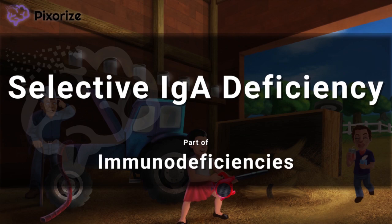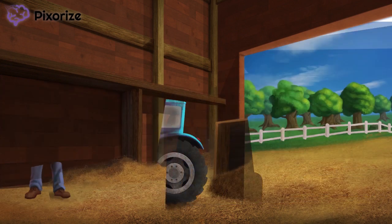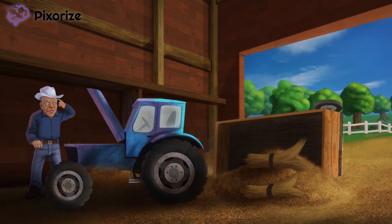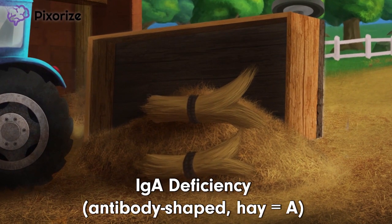Here's a quick visual mnemonic to remember all the facts about IgA deficiency come test day. Welcome to grandpa's farm and hayride — looks like we had an accident and all the hay has fallen on the ground. Notice how the hay bales are shaped like a Y, kind of like an antibody. Since hay is a recurring symbol for the letter A, this Y-shaped hay should help you remember immunoglobulin A, or IgA. The fallen hay anchors you to this scene on Selective IgA deficiency.